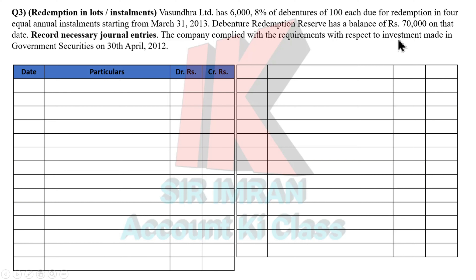The DRI (Debenture Redemption Investment) you maintain will be based on Rs. 1,50,000 per installment. As each installment comes, you do DRI accordingly. In lump sum, DRI is directly 15% of Rs. 6 lakhs. But here with 4 installments, for the first installment: divide Rs. 6 lakhs by 4 = Rs. 1,50,000, so DRI is 15% of Rs. 1,50,000 = Rs. 22,500. DRI is always maintained one year before the redemption year.